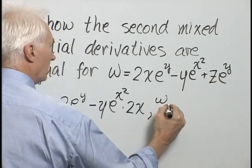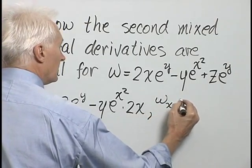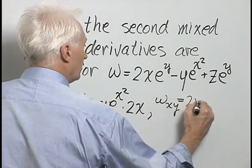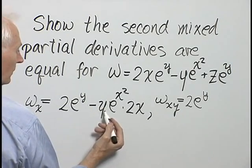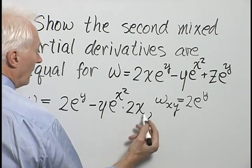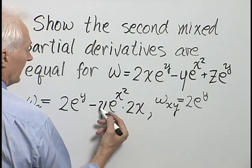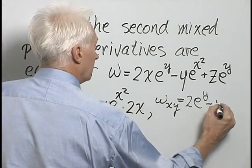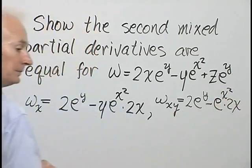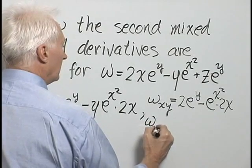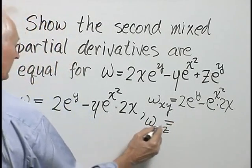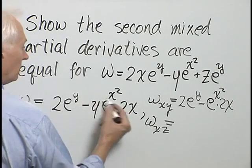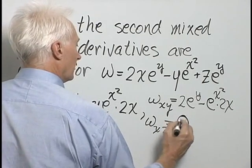For the mixed partial w sub xy, we differentiate ∂w/∂x with respect to y. The derivative of 2e^y is 2e^y. Differentiating −2xye^(x²) with respect to y: everything except y is constant, so we get −2xe^(x²). For w sub xz, differentiating ∂w/∂x with respect to z: z doesn't appear in that expression at all, so that derivative is zero.